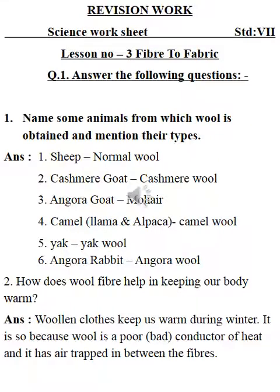First one is sheep, which gives us normal wool. Second one is the Kashmir goat, from which Kashmir wool is obtained. Third is the Angora goat, a particular type of goat which provides us mohair. Fourth is the camel — particular types called llama and alpaca — they provide camel wool. Next is the yak, which provides yak wool. And the last type is the Angora rabbit, which provides Angora wool.